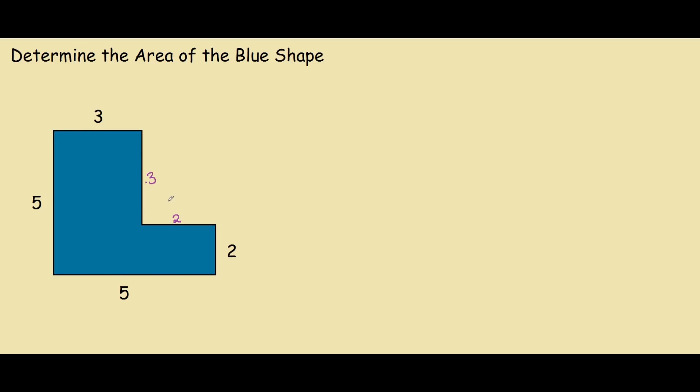Now that we have all the dimensions, we can work out the area of the blue shape. Before going on, we know that the area of a rectangle is length times height.